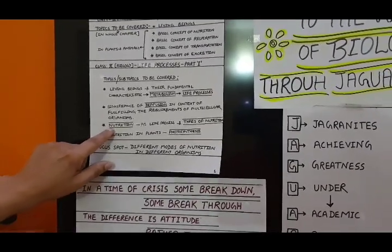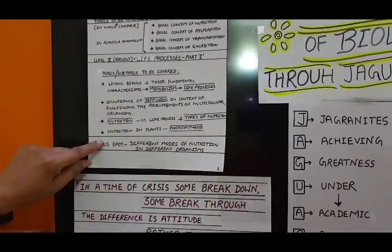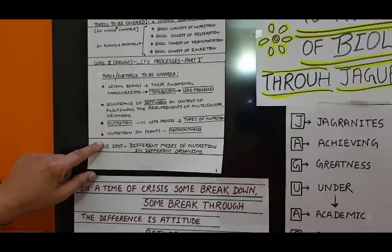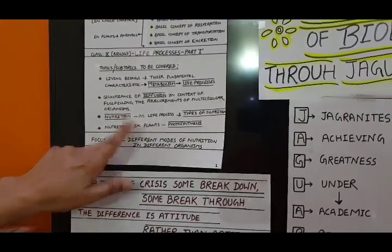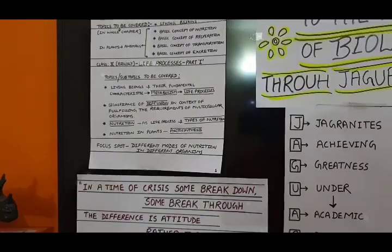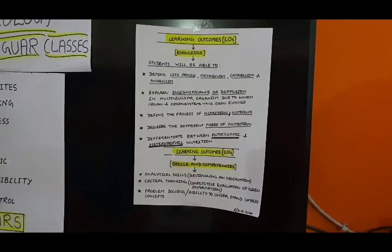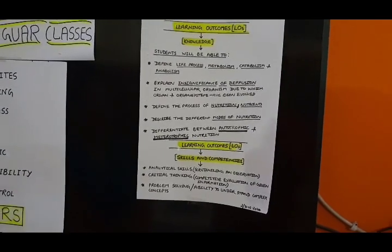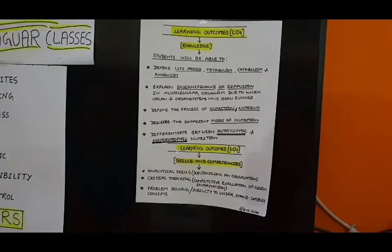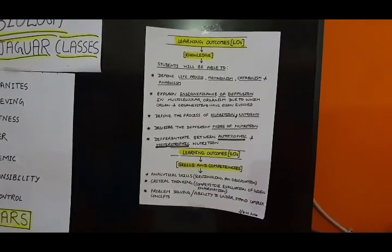Side by side, we will take Nutrition as the Life Process and Types of Nutrition in Organisms. I will start with a little bit about Photosynthesis, but will cover the detail in the next class. Before starting the chapter, I want to share the learning outcomes. After this class, all of you will be able to define life processes, metabolism, catabolism, and anabolism.